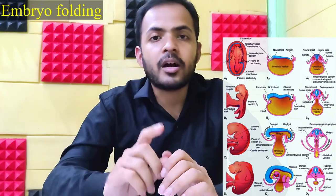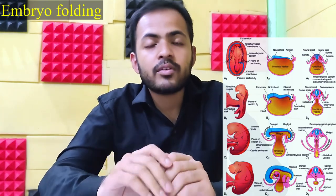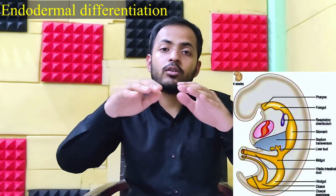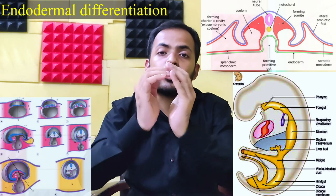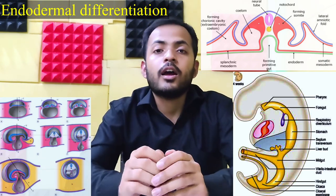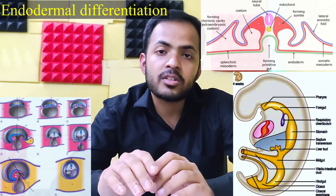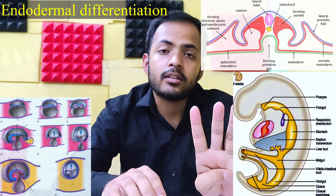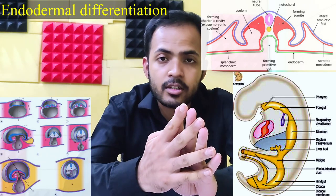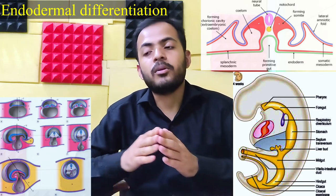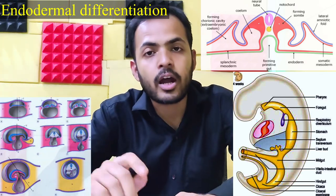Due to embryonic folding, the primitive gut arises. At the end of the fourth week, the peritoneal cavity also arises. The fourth component is endodermal differentiation — as the embryo folds, the endoderm gets folded and joins together to form a tubular structure. From this endodermal tube the entire GI tract, the primitive gut, arises. Embryonic folding and endodermal differentiation occur simultaneously. The entire length of the endodermal tube is divided into three parts: the foregut, midgut, and hindgut.